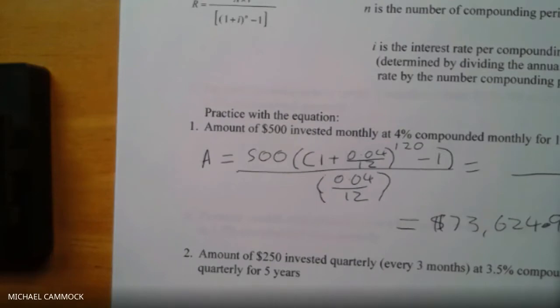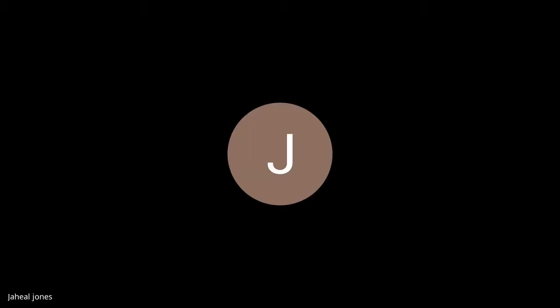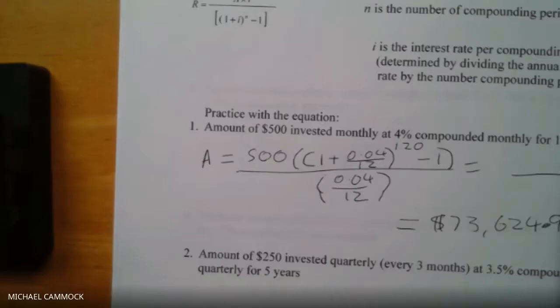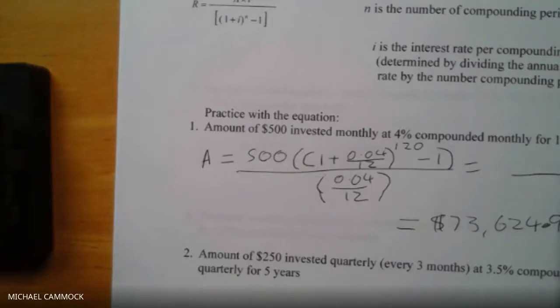Coming back to Jahil: after getting that number, hit the divide sign — don't clear it — open a bracket, put 0.04 divided by 12, close the bracket, and press equals. He confirms getting the $73,000 answer.